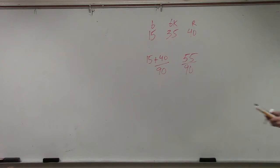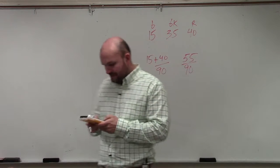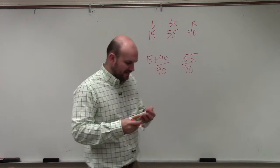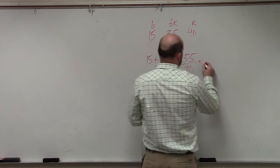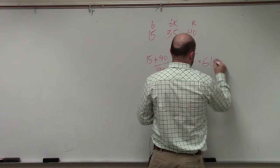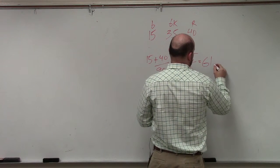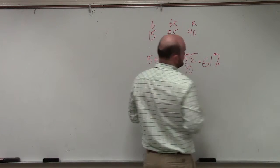So now, to find actually the percentage here, I'll just take 55 divided by 90, and I get 61.1%. And I'll just round that to 61%. We'll just round it down to the nearest whole.